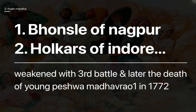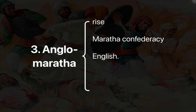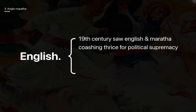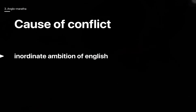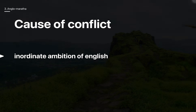The death of young Peshwa Madhavaravan in 1772 further weakened the Confederacy. The first quarter of the 19th century saw the English and Marathas clashing thrice for political supremacy. The cause of conflict was the inordinate ambition of the English, and the divided house of the Marathas encouraged them.